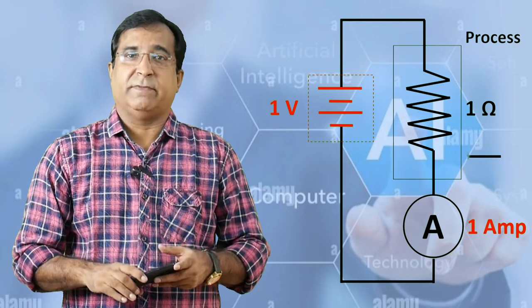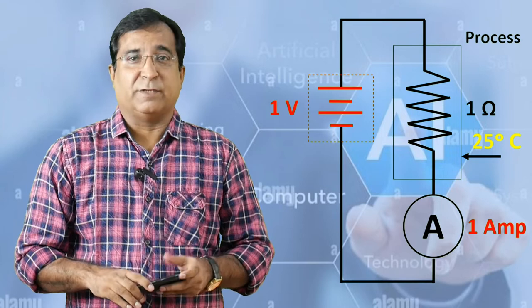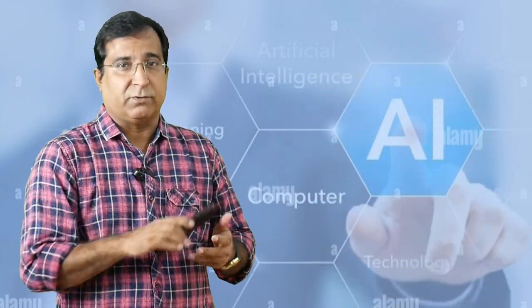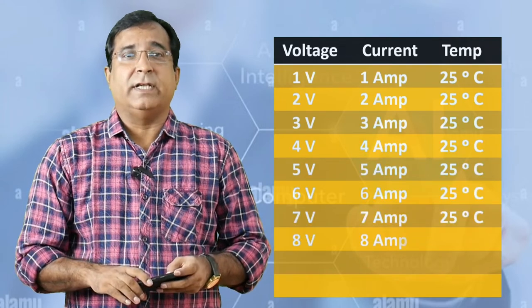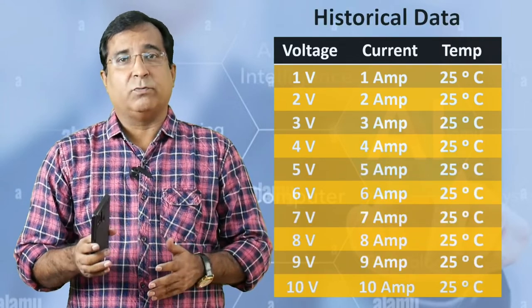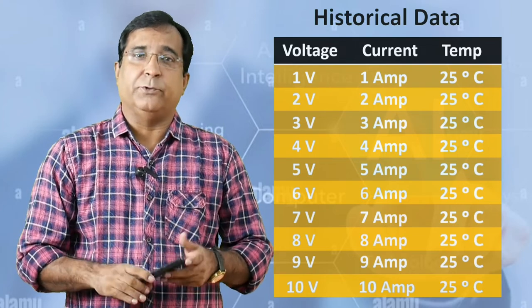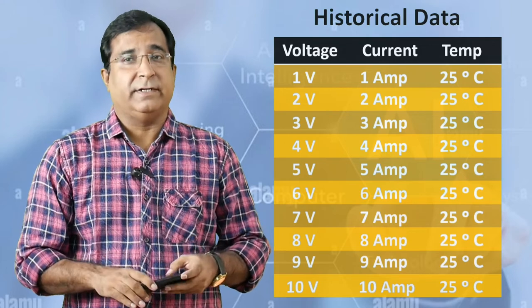Let's apply 1 volt across it. As per Ohm's law the current of the size of 1 ampere will flow through this process or resistance. Likewise at 2 volts it will be 2 amperes and so on. This way I collect 10 readings of voltage as inputs and 10 readings of output as current. If there is any variation in input-output current due to variation in ambient temperature, that is also captured in readings.